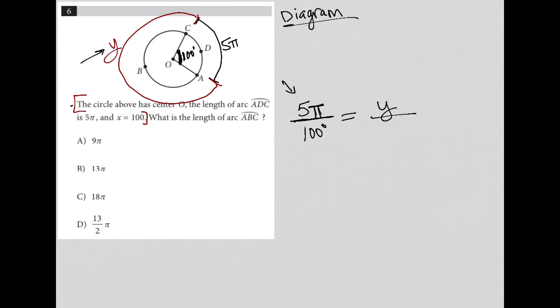But I do know the degree measurement of the central angle. It's not given directly, but I can see that if I have 100 degrees, then the remaining angle must be 260.